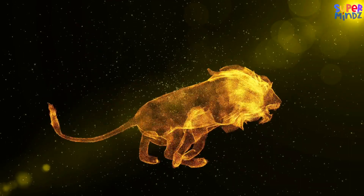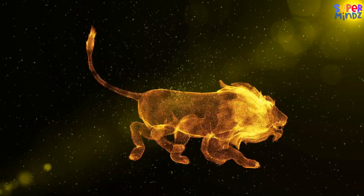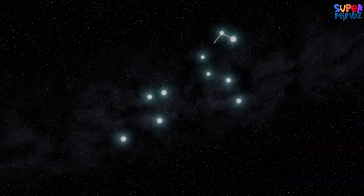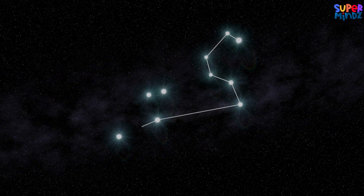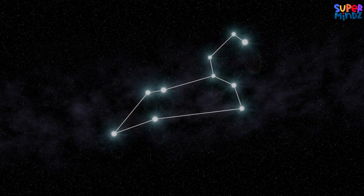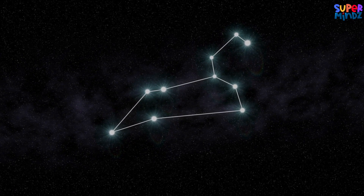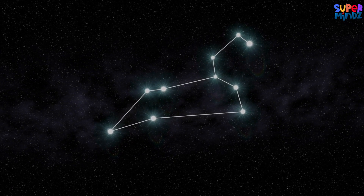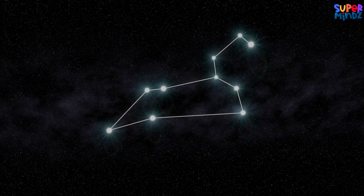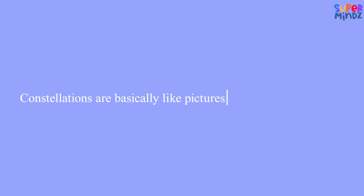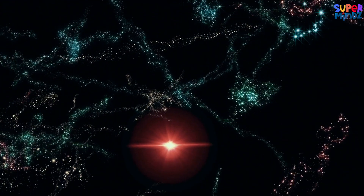Leo, representing the lion in Greek mythology, is notable for its distinctive backward question mark shape, which outlines the lion's head and mane.